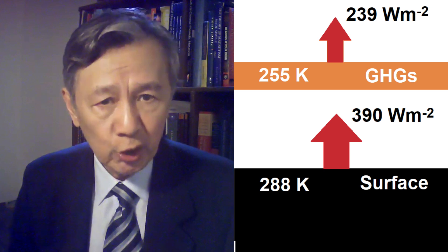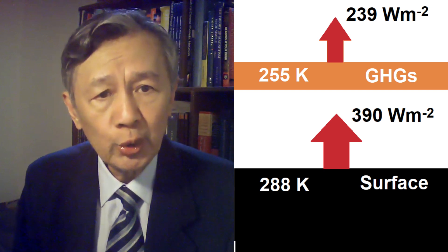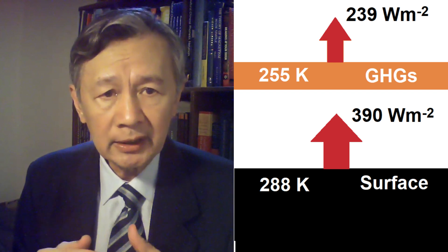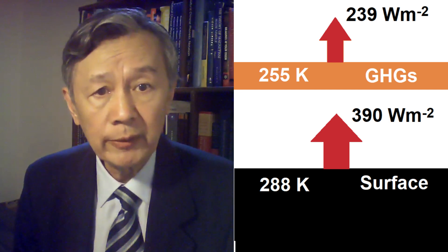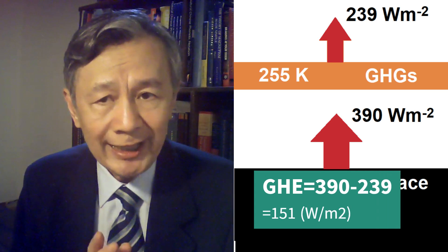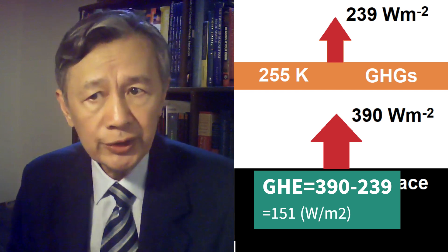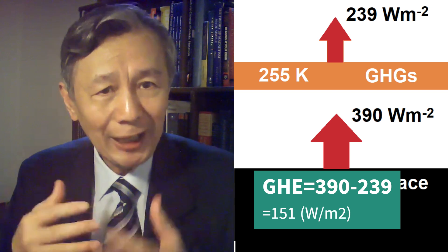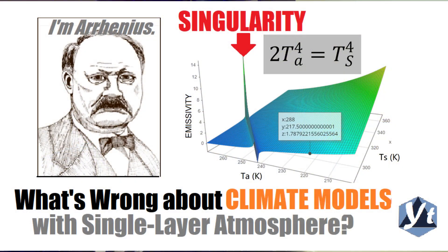For over a century, based on Arrhenius' two-layer model, the greenhouse effect was calculated as a difference between two radiances. One is the black body at temperature 288 Kelvin and another is the black body at temperature 255 Kelvin. Namely, 390 minus 239 equals 151 Watt per meter square, in loosely defined clear sky. But in a cloudy sky, this formula doesn't work at all. As I have recently revealed, however, all two-layer climate models are mathematically divergent and hence physically misleading. Hence, any model based on the Arrhenius theory is wrong.